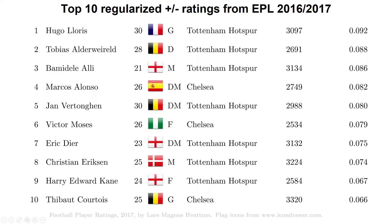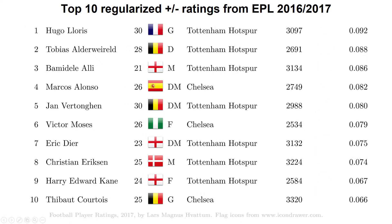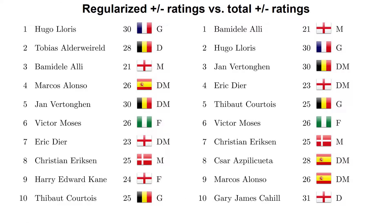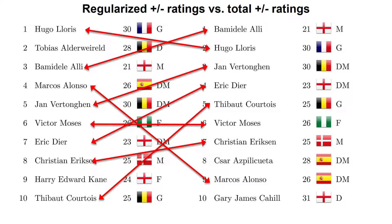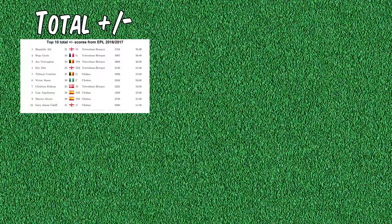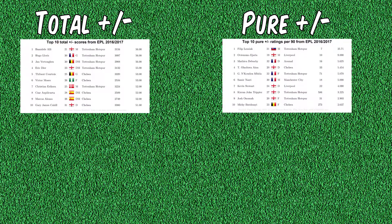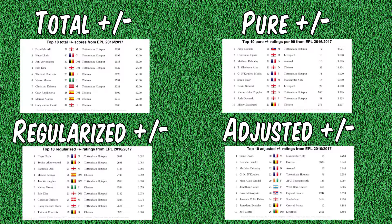Now this is a somewhat surprising result. The player rankings for the 2016-2017 season of the English Premier League are almost identical for the regularized adjusted plus minus ratings and for the total plus minus ratings that we started with in the first place. Taking these two ratings side by side, 8 out of 10 players in the top 10 are in both lists, just in slightly different positions. It seems we just went through a lot of trouble for very little — from total plus minus, to plus minus per 90 minutes, to adjusted ratings, and finally to regularized adjusted plus minus ratings, and we have barely moved.